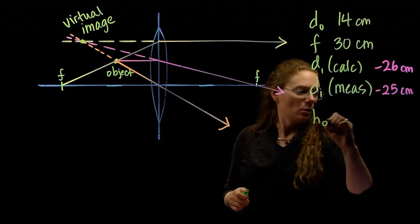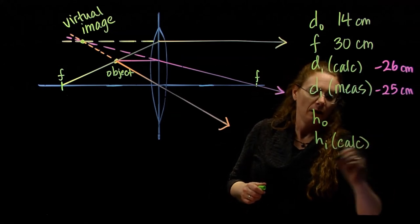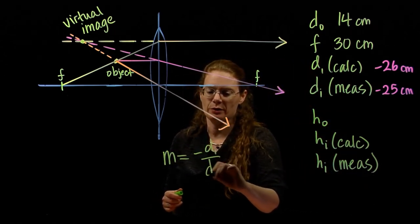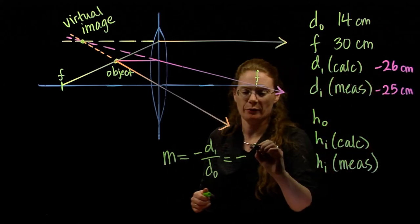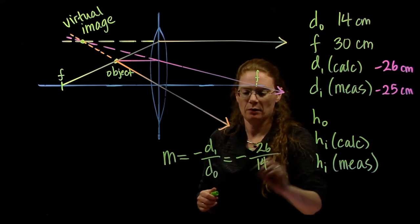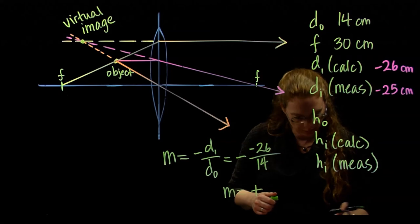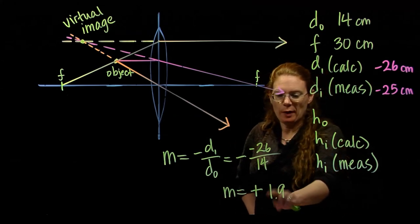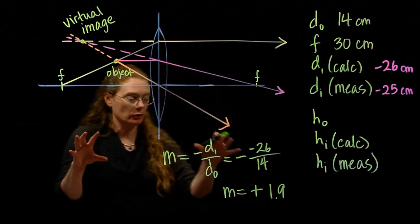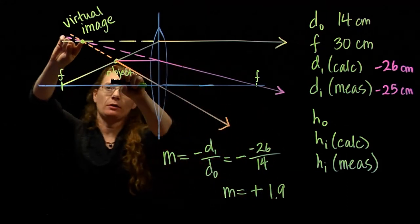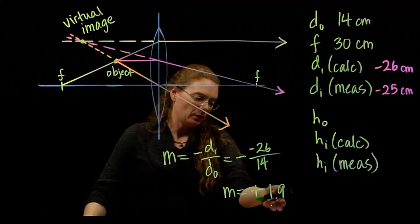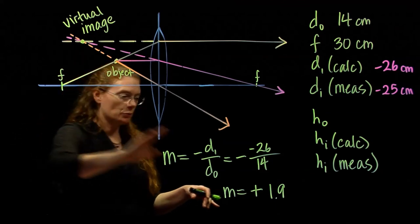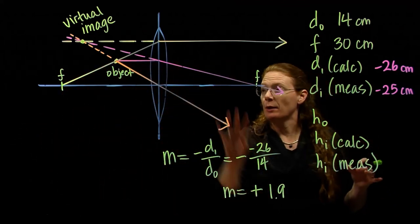And we can do the same thing with HO, HI calculated, and HI measured. And to get this, we need to know the magnification. M equals minus DI over DO. Minus DI, calculated is what I prefer, over DO, 14. Alright, magnification is positive, 26 over 14, about 1.9. What does a magnification of positive 1.9 tell me? The positive tells me it's not inverted. It's the object and the image are on the same side. 1.9, it's bigger than 1. That tells me that the image is taller than the object, very clearly. And it is almost twice as tall. So those match up. This has two different physical meanings, and they both match with my ray diagram.